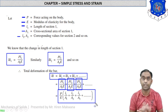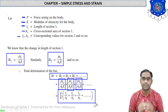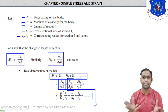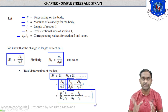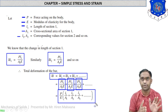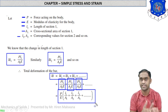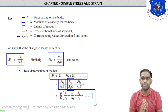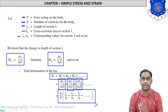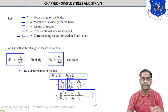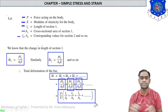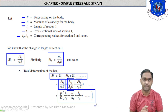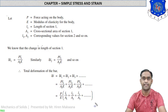This is the final formula to calculate δL when all sections are of the same material. Sometimes the different cross-sections are made of different materials, so Young's modulus E cannot be taken as common. In that case the formula becomes δL = P × (L1/(A1E1) + L2/(A2E2) + L3/(A3E3)), where each section has its own modulus.